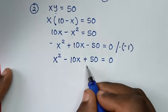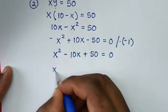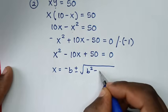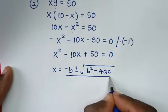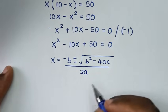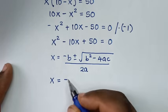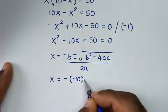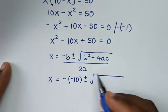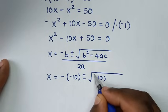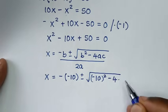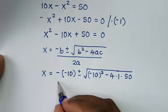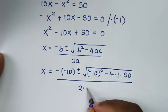From this quadratic equation, we will solve using the quadratic formula: x is equal to negative b plus or minus square root of b squared minus 4ac, over 2a. Here a is 1, b is negative 10, and c is 50. So x equals negative of (negative 10), plus or minus square root of (negative 10) squared minus 4 times 1 times 50, over 2 times 1.